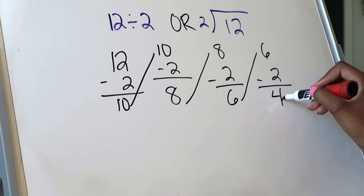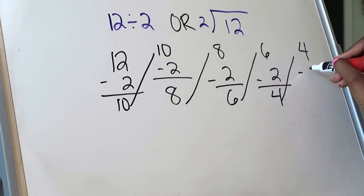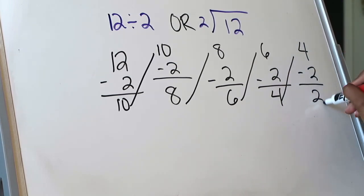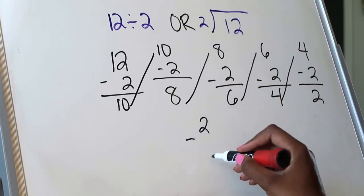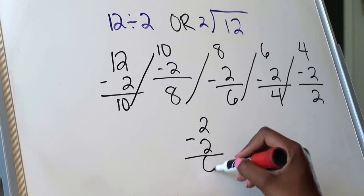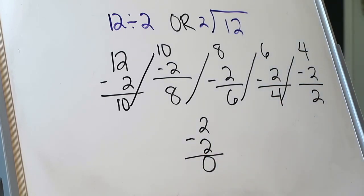Continuing: 6 minus 2 is going to be 4. Keep going — 4 minus 2 is 2. Then 2 minus 2 is going to be 0. So now I'm at the point where I have nothing left to subtract. I have 0, so that means I'm done with my repeated subtraction. Now I'm going to ask myself how many times did I have to subtract in order to get an answer of 0.